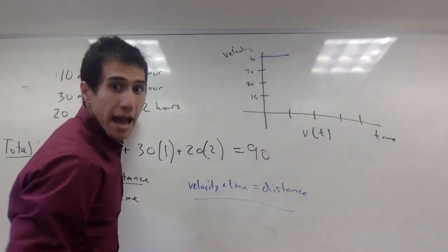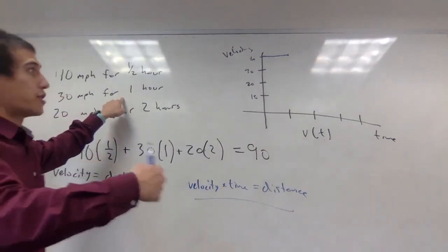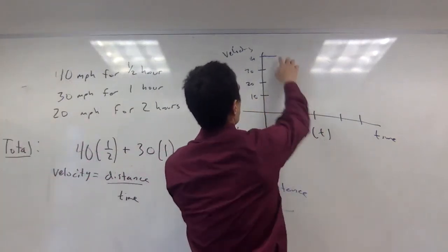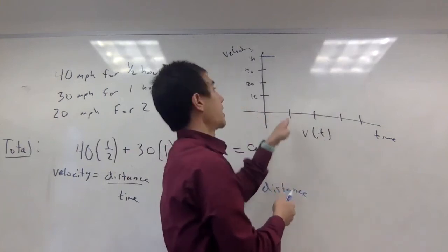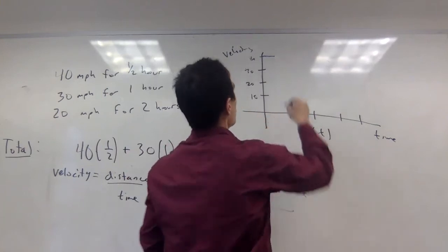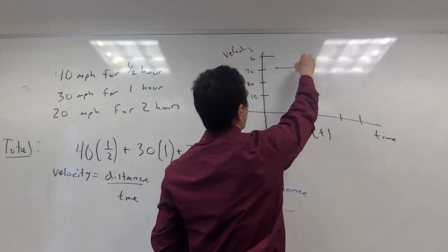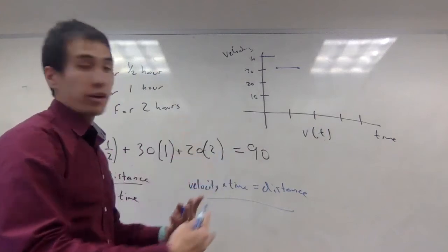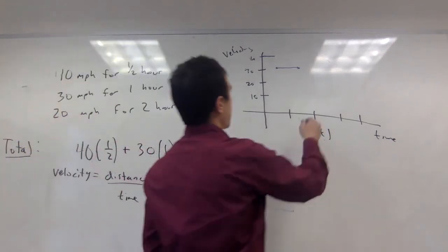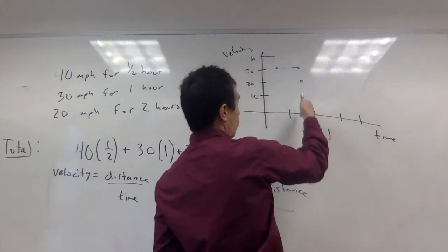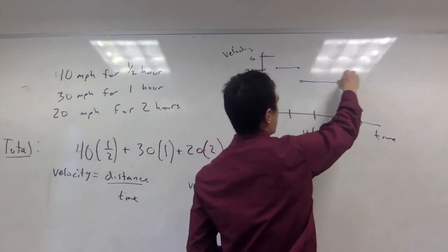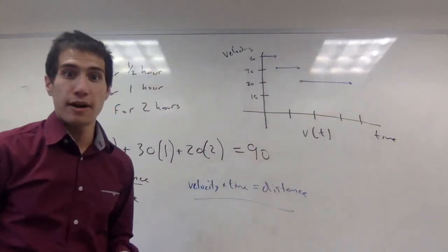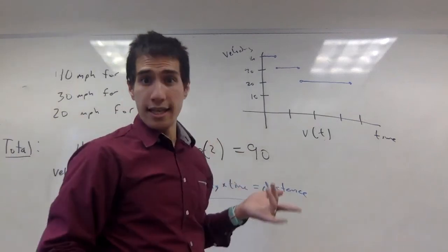From time one half to time one and a half, I drove 30 miles an hour. Then for the next two hours I drove 20 miles an hour, so from time one and a half to time three and a half, I drove 20 miles per hour. And so my velocity function looks like this step graph.